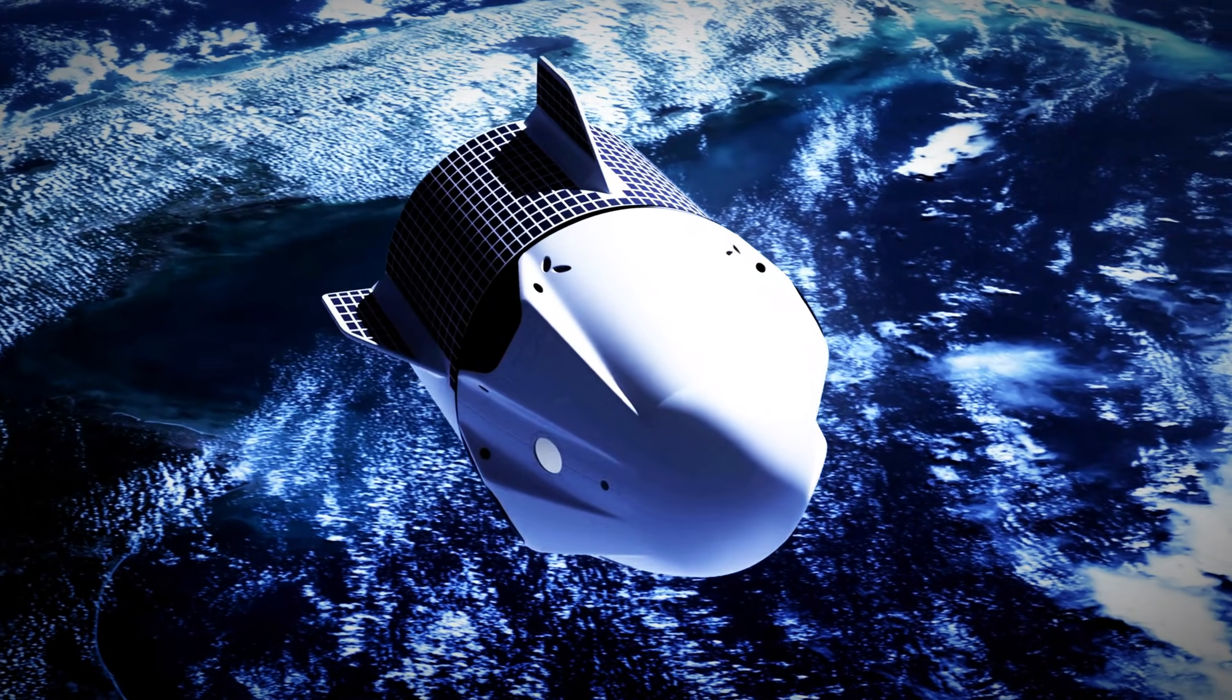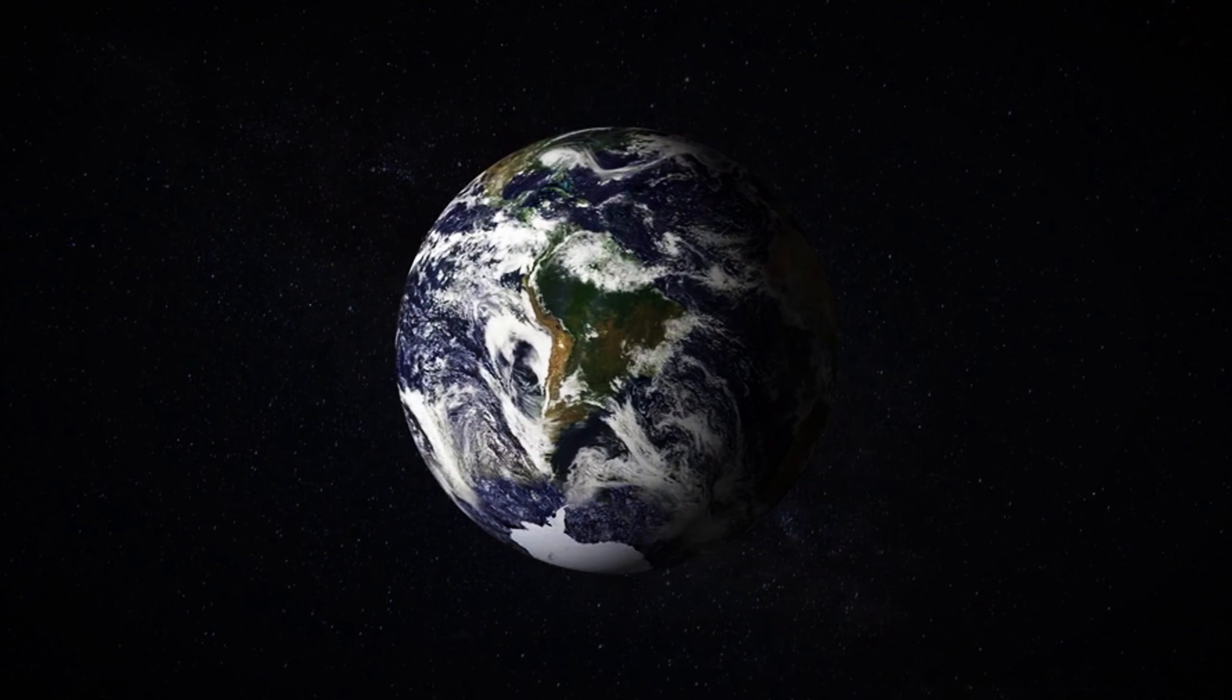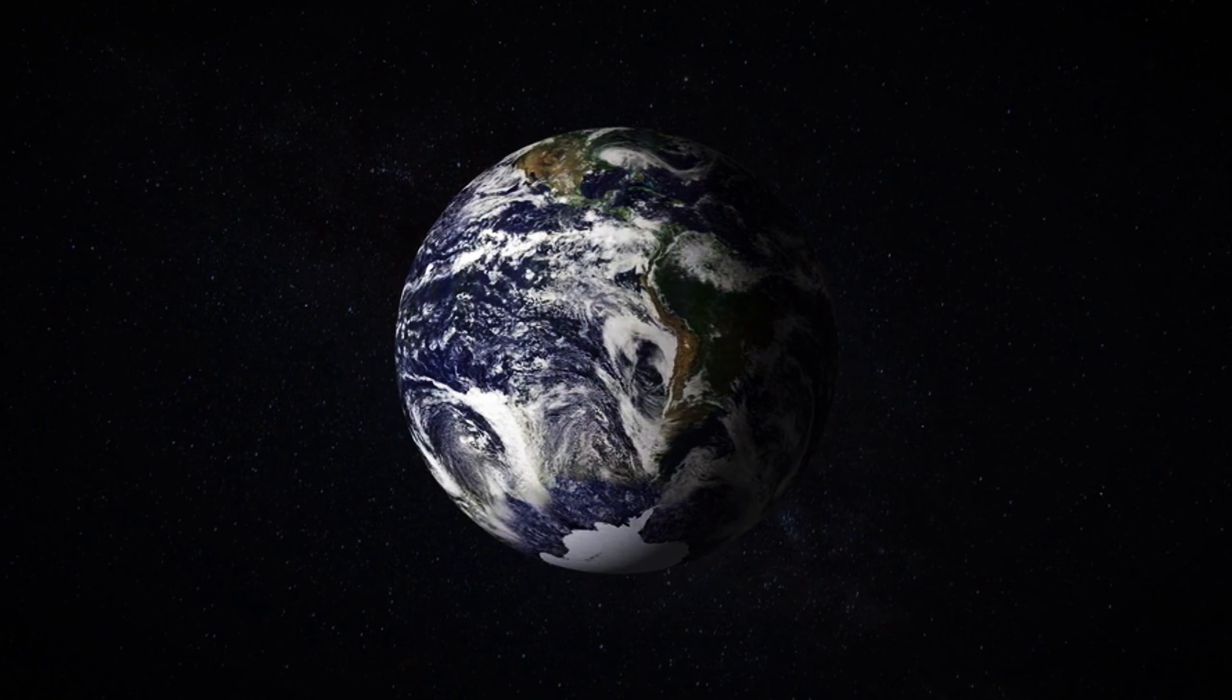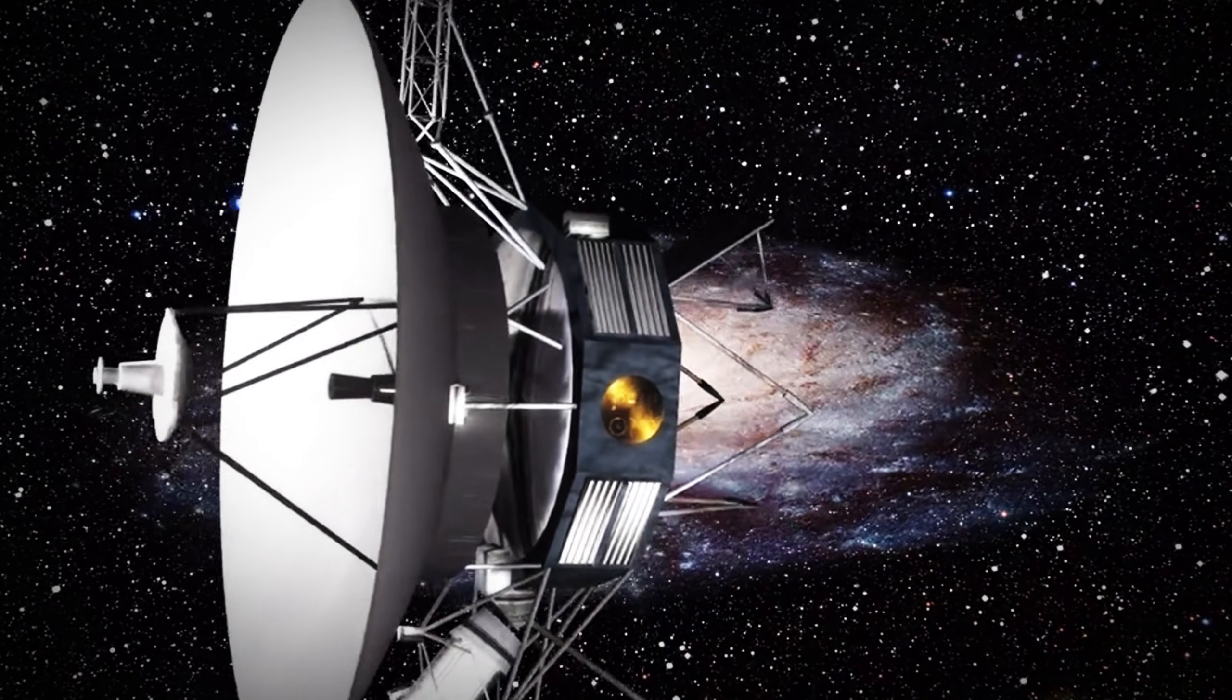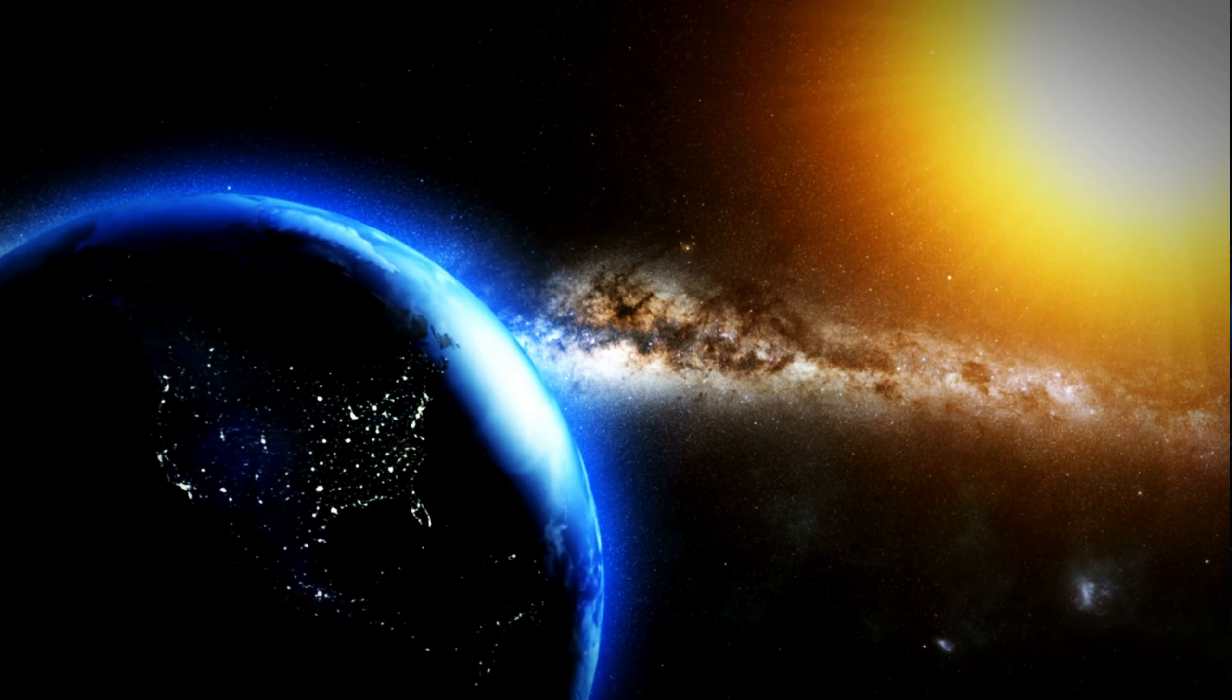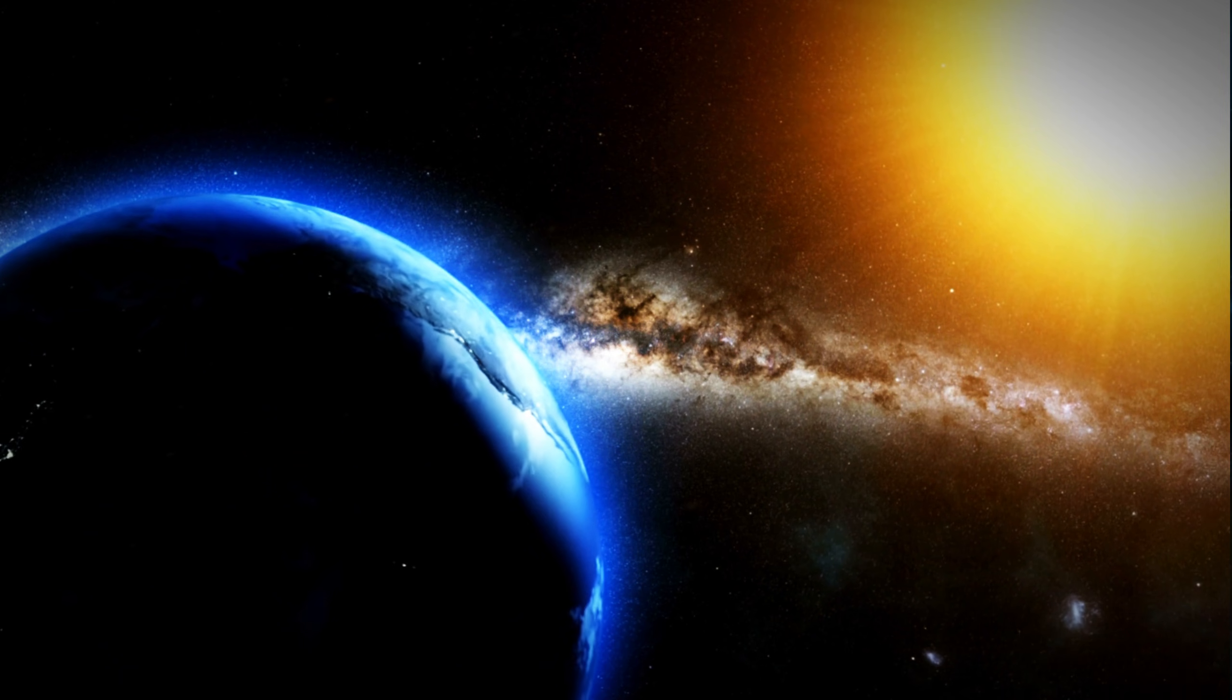In a distinctive touch, each spacecraft carries a golden record, a time capsule containing Earth's sounds and music, meant for potential extraterrestrial civilizations. As of January 2024, Voyager 1 is about 14.9 billion miles from Earth, or 158 times the distance between Earth and the Sun, making it the farthest human-made object from us.